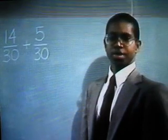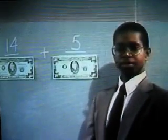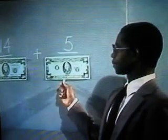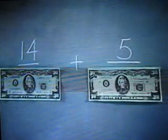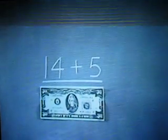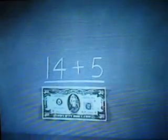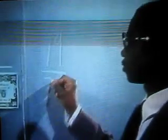We now have 14 thirtieths plus 5 thirtieths. Think of the thirtieths as $30 bills — if we have 14 thirty-dollar bills plus 5 thirty-dollar bills, how many thirty-dollar bills would we have? 19 thirty-dollar bills. So the answer is 19 thirtieths. Note that we always write the denominator just once, then add the tops. Write the denominator just once, add the tops — now there's the answer so you can finally stop.